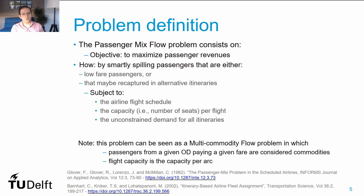A passenger itinerary is composed by one or multiple flights that take the passengers from their origin to their destination. We'll use this problem to help us understand the column generation algorithm, but this is also an interesting problem because we can use our knowledge on the multi-commodity flow problem. The problem was first presented by Glover et al. in 1982 and was further developed by colleagues at MIT, and is commonly associated with the respective fleet allocation problem as discussed in the paper from Cynthia Barnett.